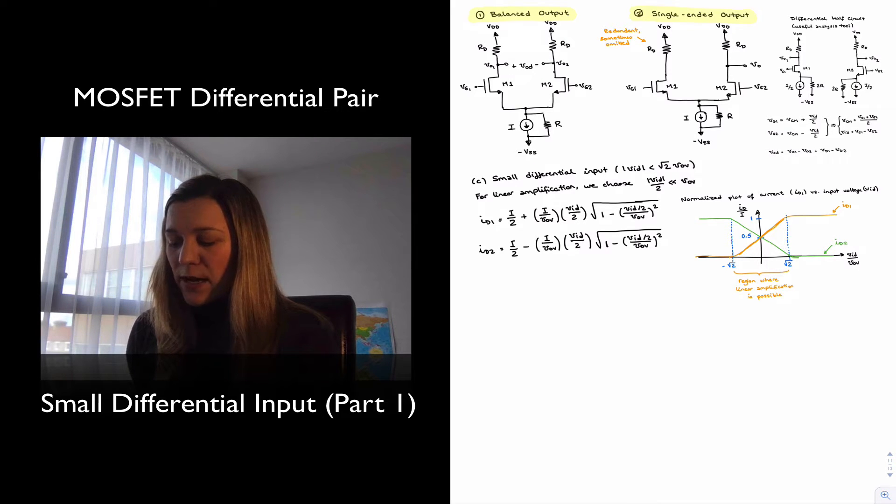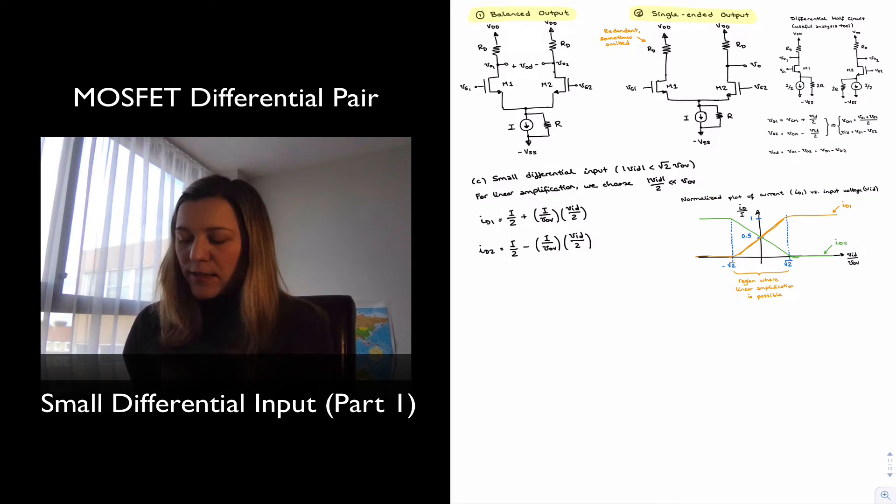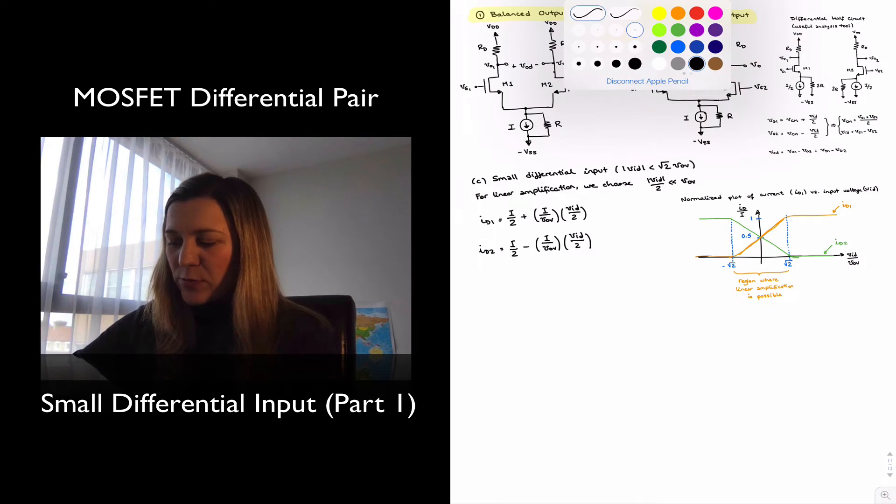And so in that case, we can approximate ID1 and ID2 as being basically I halves plus I over VoV times VAD halves times the square root of 1, which is 1. And in the case of ID2, we can approximate it as I halves minus I over VoV times the square root of 1, which is 1. So in that case, we can approximate these currents by these expressions.